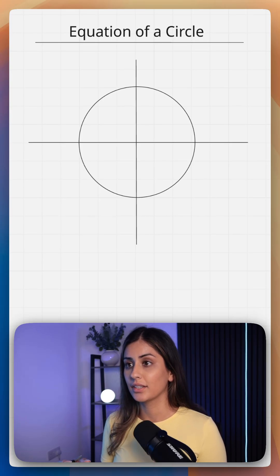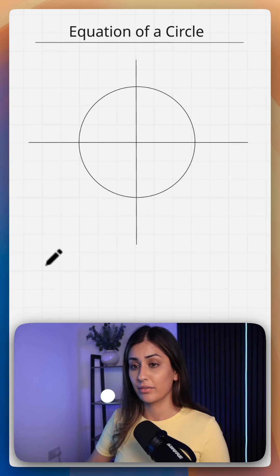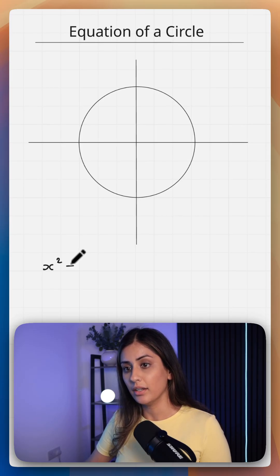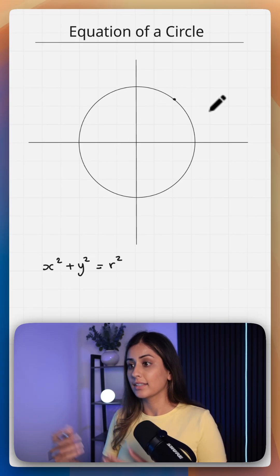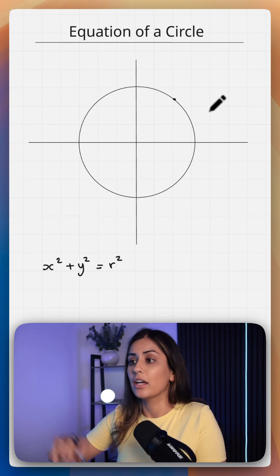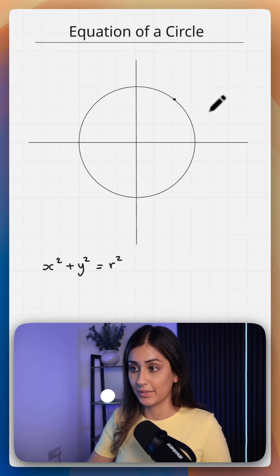I'm going to show you how to understand the equation of a circle. The general form you're probably familiar with from GCSE is x squared plus y squared equals r squared. That just means every point x and y on your circle is exactly r units away from your center.